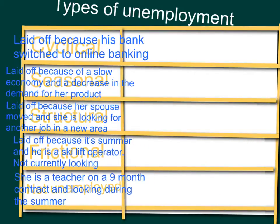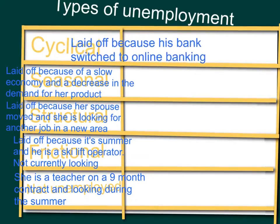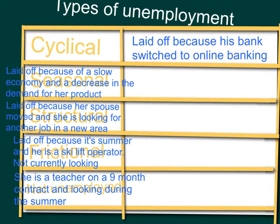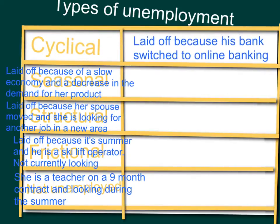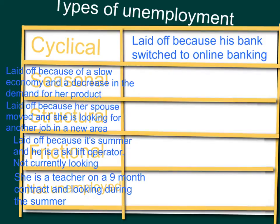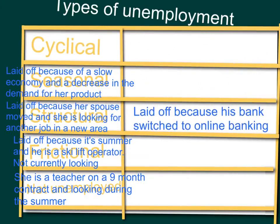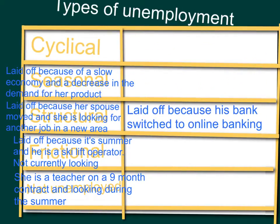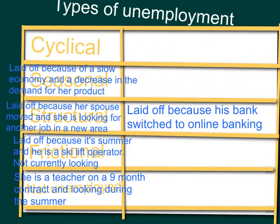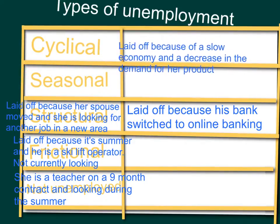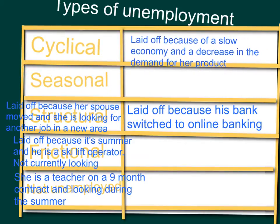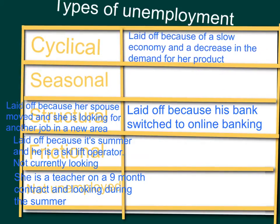Now, let's take a look at the first one: laid off because his bank switched to online banking. That looks like it's because of technology, so we're going to put that into the structural box. The second one, laid off because of a slow economy — and we're going to keep that in cyclical.